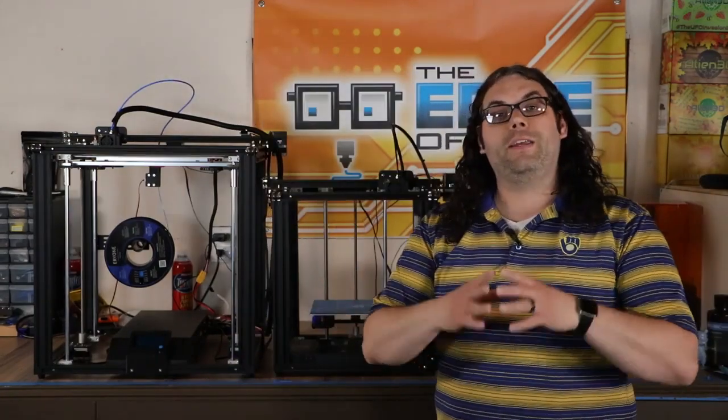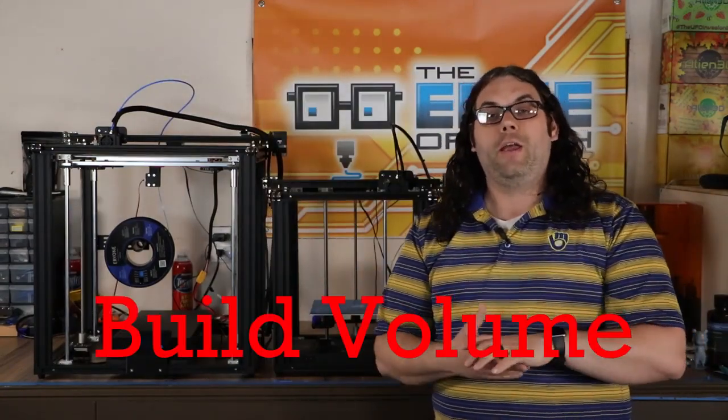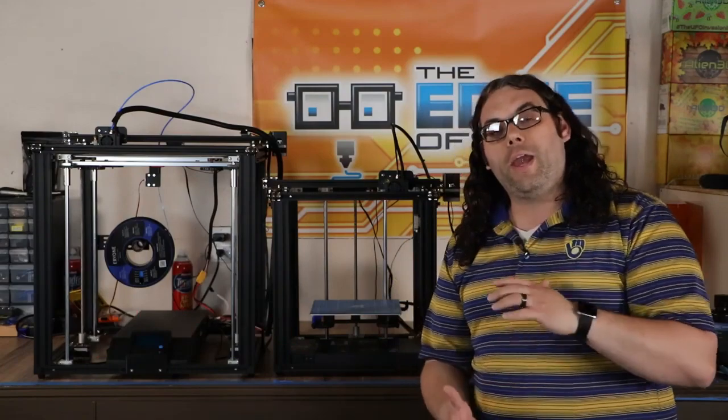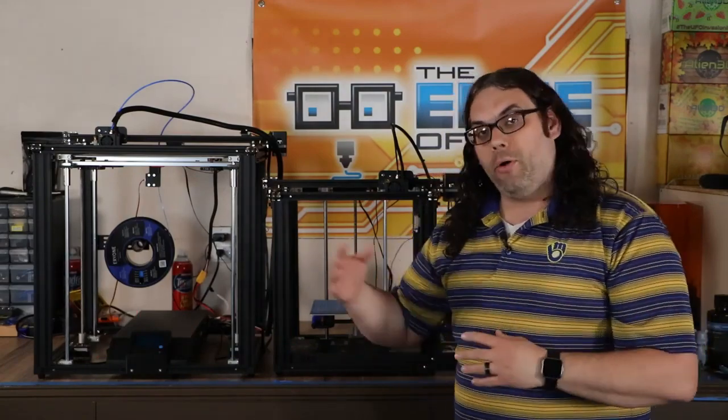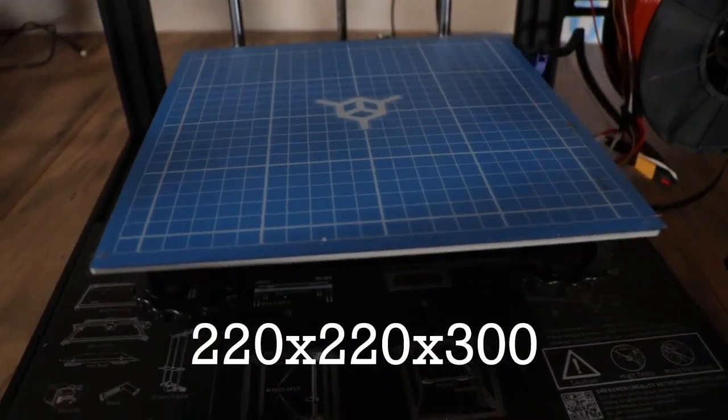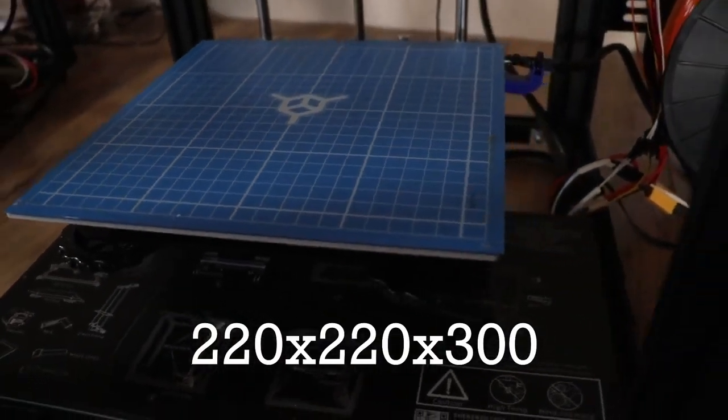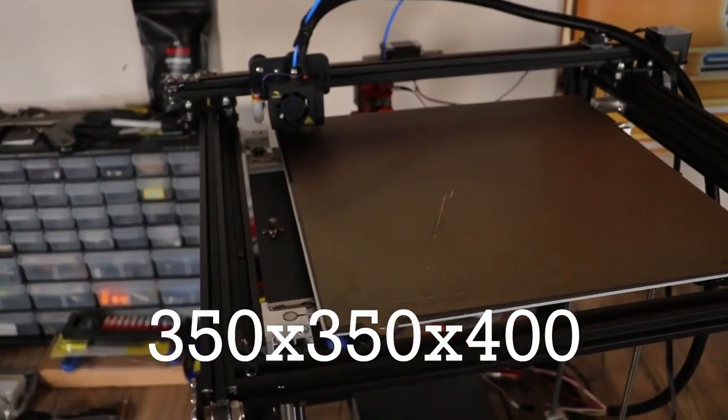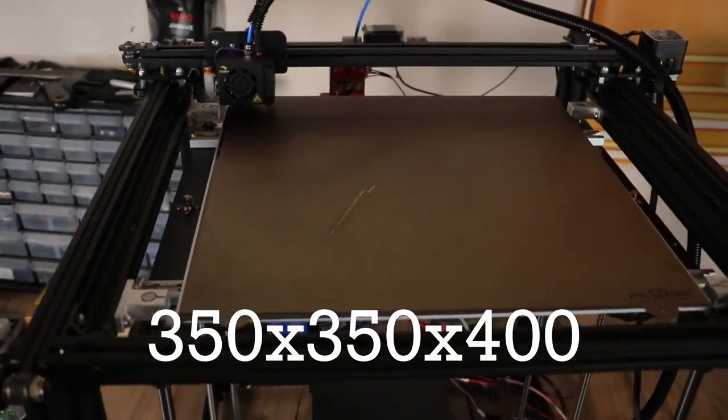Now the next thing I want to talk about is the actual build area, the amount of volume you get to build a print on both these machines. The Ender 5 is 220 by 220 by 300. The Ender 5 Plus is 350 by 350 by 400.